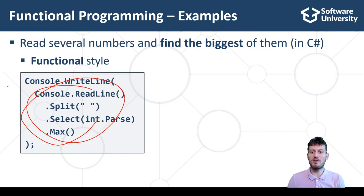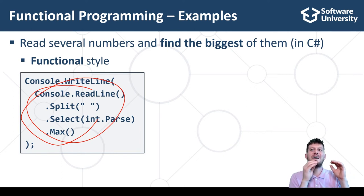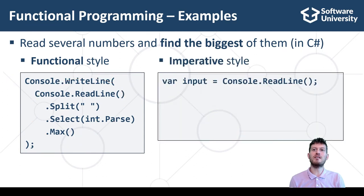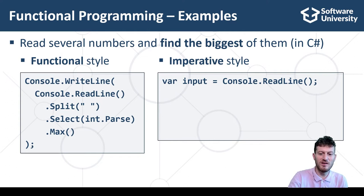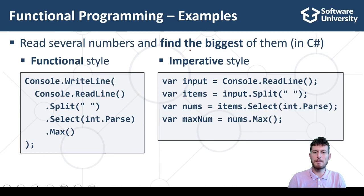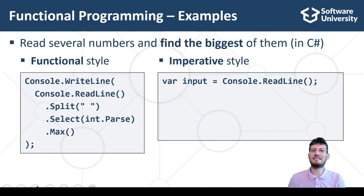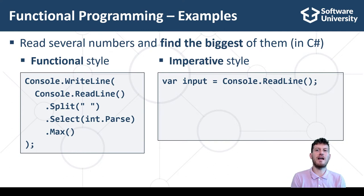This is the power of functional programming: to use a composition of functions to process certain data and obtain certain results. This functional style of writing expressions is very common in modern programming and can be seen in many programming languages, frameworks, and libraries. Now let's see the equivalent imperative style for the same program in C-Sharp. This is a piece of code written in a structured or procedural style — it consists of a sequence of commands, and each command takes its input from a variable, calculates a new result, and stores it in a variable.